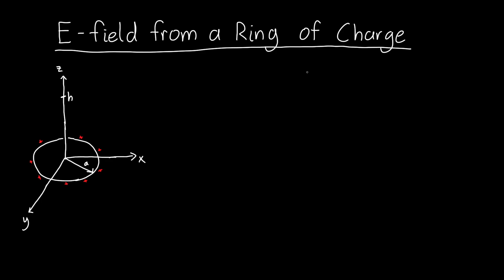In this video we're going to learn how to calculate the electric field from a ring of charge. To set up this problem, let's say that we have a ring of charge centered about the origin, and we want to figure out what the electric field is at some point, some height h above the center of this ring. The total amount of charge on the ring is positive q.